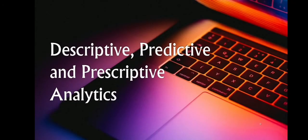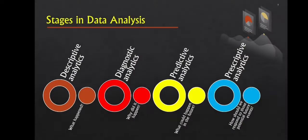We now go to descriptive, predictive, and prescriptive analytics. Before we discuss the three types, let us first discuss the stages in data analysis. The first stage is descriptive analytics — this tells us what happened, describing what occurs in an organization or business. Next we have diagnostic analytics, which answers the question: why did it happen?